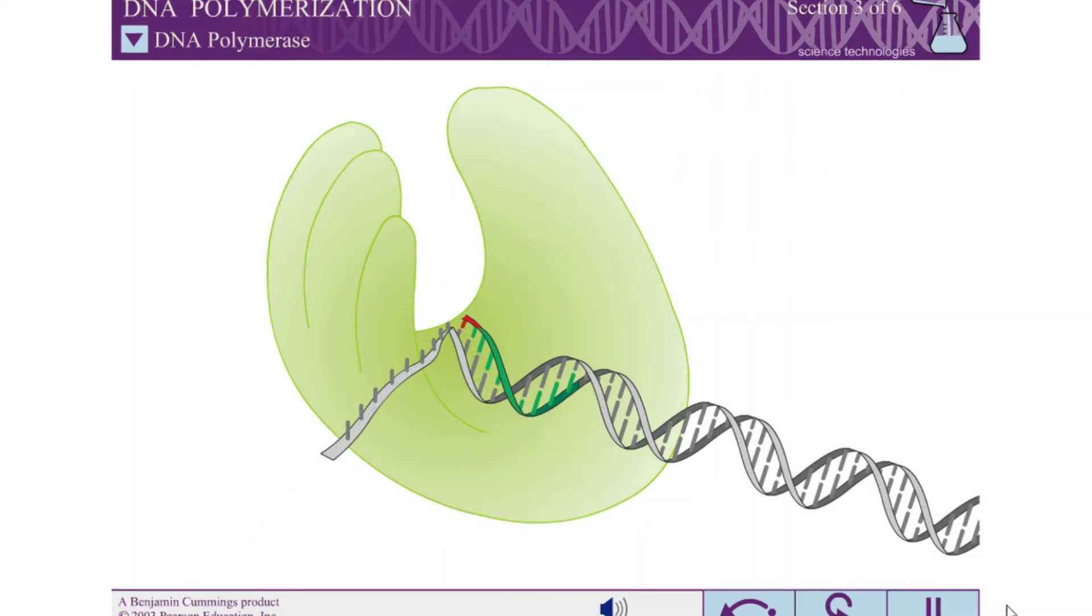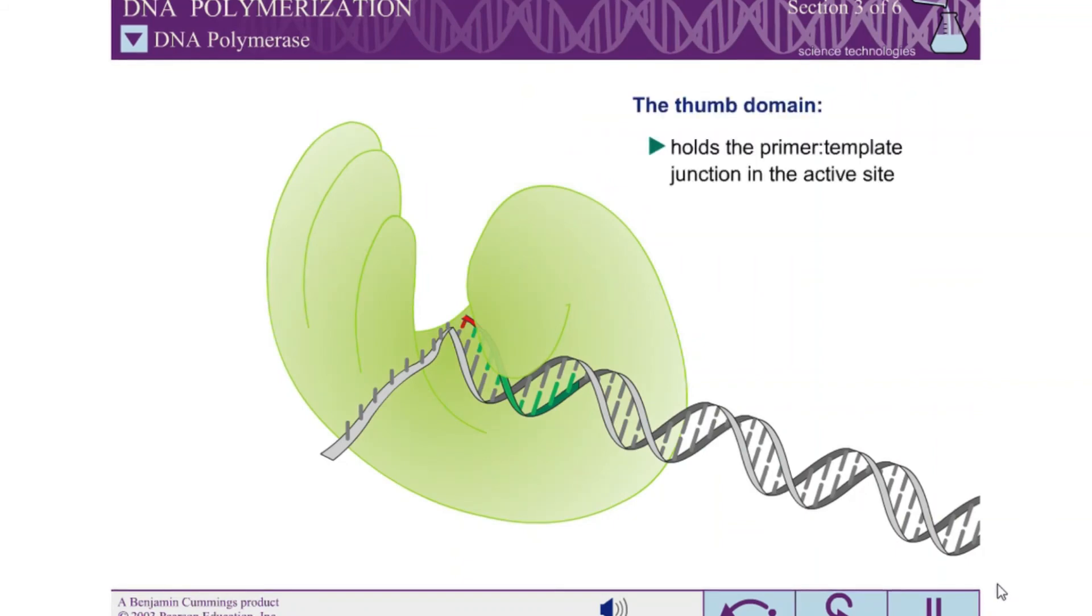In contrast to the fingers and the palm, the thumb domain is not intimately involved in catalysis. Instead, the thumb interacts with the DNA that has been most recently synthesized. This serves to maintain the correct position of the primer template junction in the active site and reduce the rate of dissociation of the polymerase from the DNA substrate.